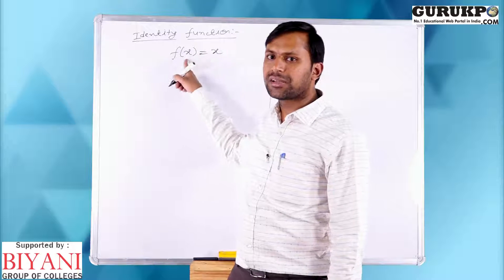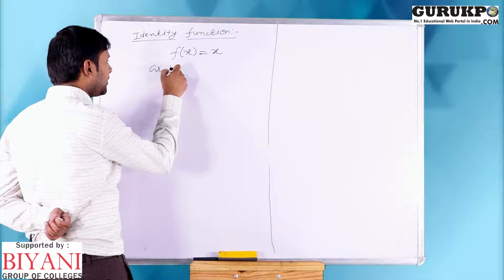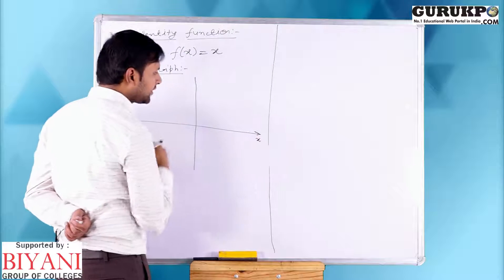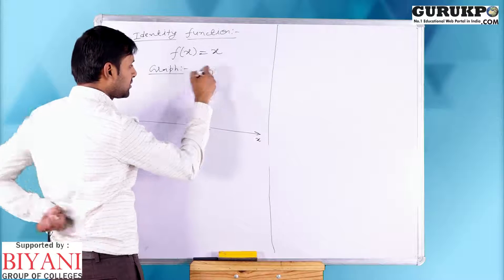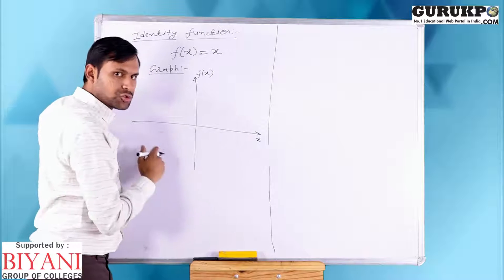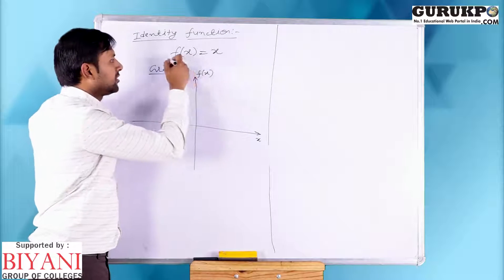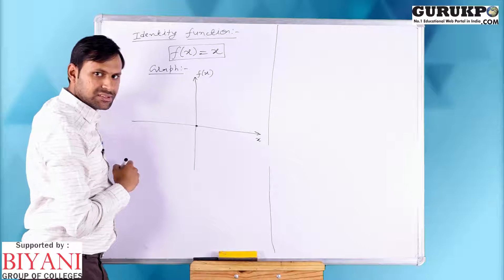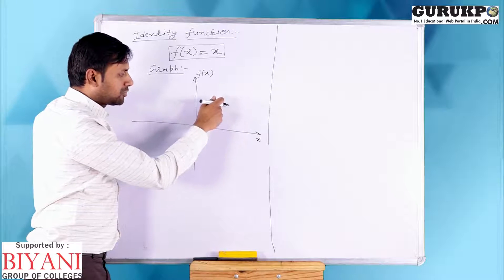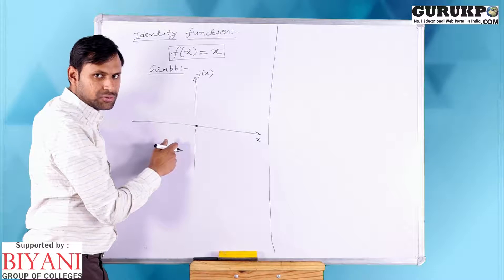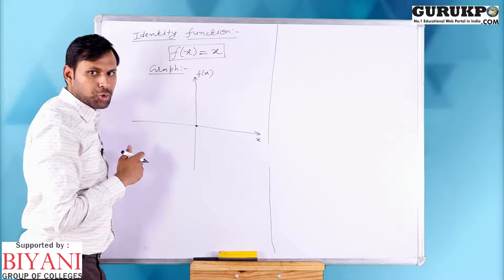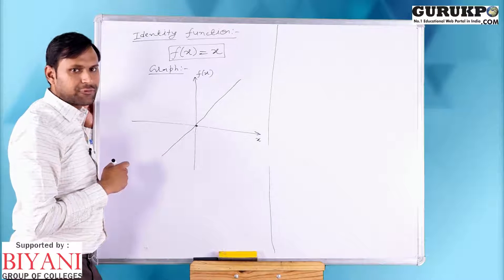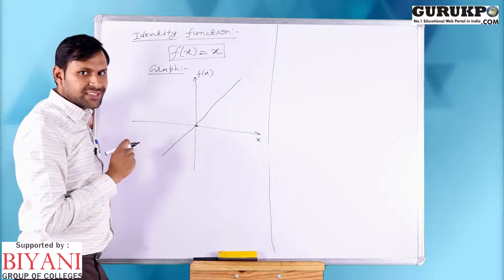Now I want to design the graph of this function. We draw two axes: x and f(x). Function is f(x) = x, so we can obtain the graph easily. If x is 0, f(x) is 0; x is 1, f(x) is 1; x is 2, f(x) is 2; x is minus 1, f(x) is minus 1; x is minus 2, f(x) is minus 2. So the graph is a straight line passing through the origin. At every point of this graph, x equals f(x).